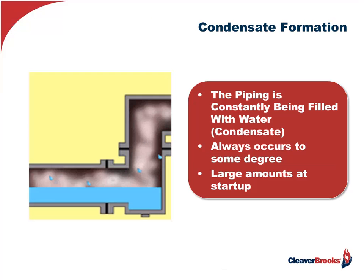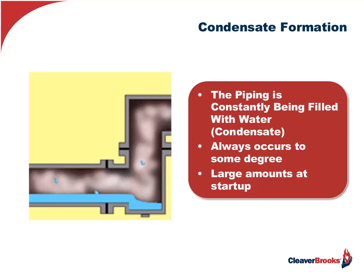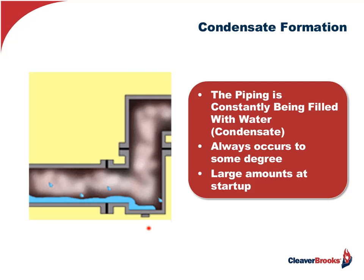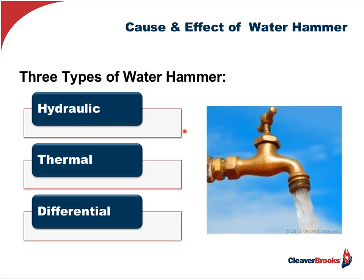Talking about velocity and these pipes that are radiating heat — the steam distribution piping — you're going to be generating a certain amount of condensate. Depending upon the amount of insulation you have on the piping, it could be even more. Less insulation or no insulation means a lot more liquid will accumulate as condensate in that piping. Note also the 90-degree bend shown here. This is probably normal operation.